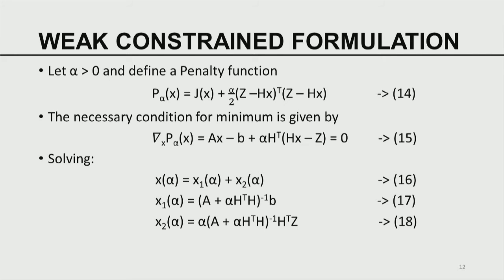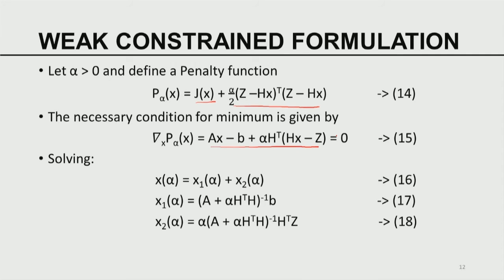For the weak constraint formulation, the penalty function PF(x) equals J(x) plus (alpha/2) times (Z minus H of x) transpose (Z minus H of x). Setting the gradient of PF to zero and solving gives x equals X1(alpha) plus X2(alpha), where each component depends on alpha. The weak solution has two components both depending on alpha, and the sum of equations 17 and 18 gives equation 16, the solution minimizing the penalty function.